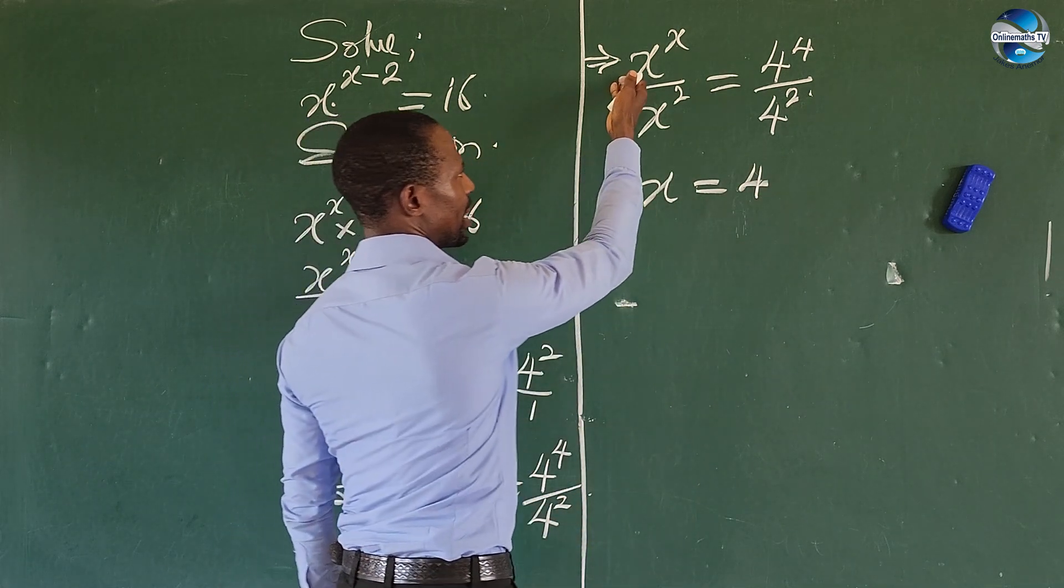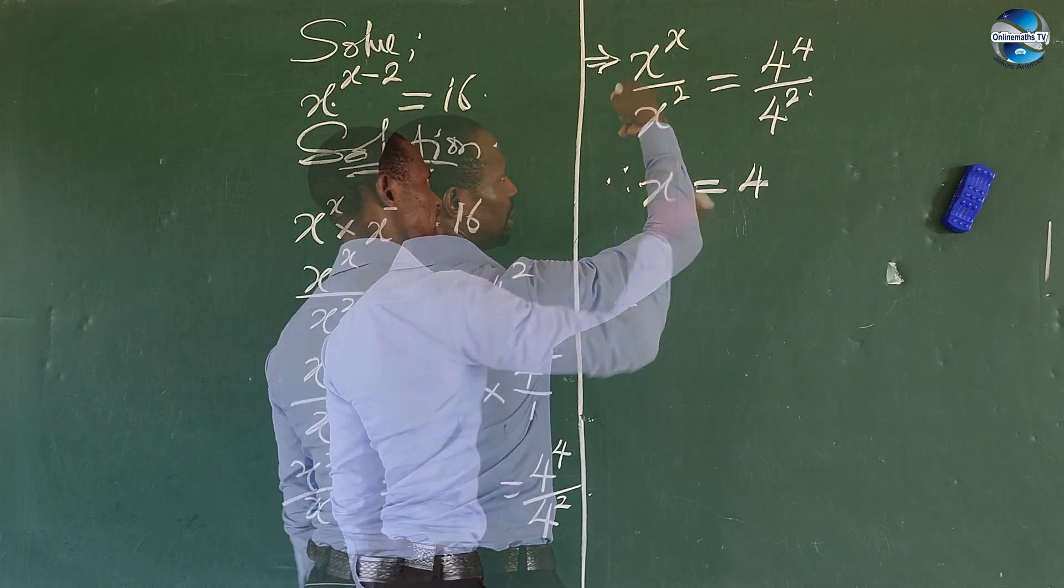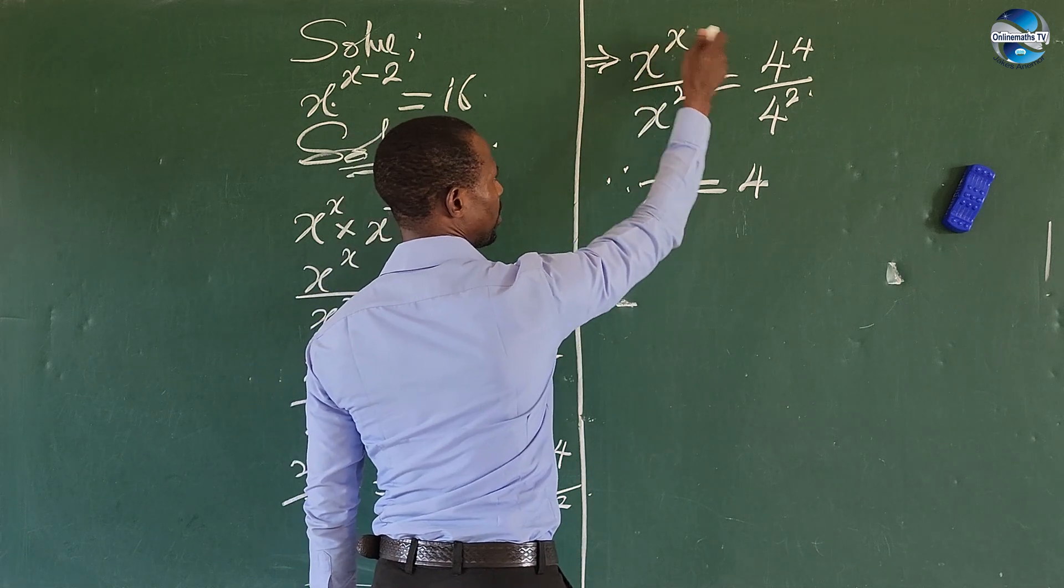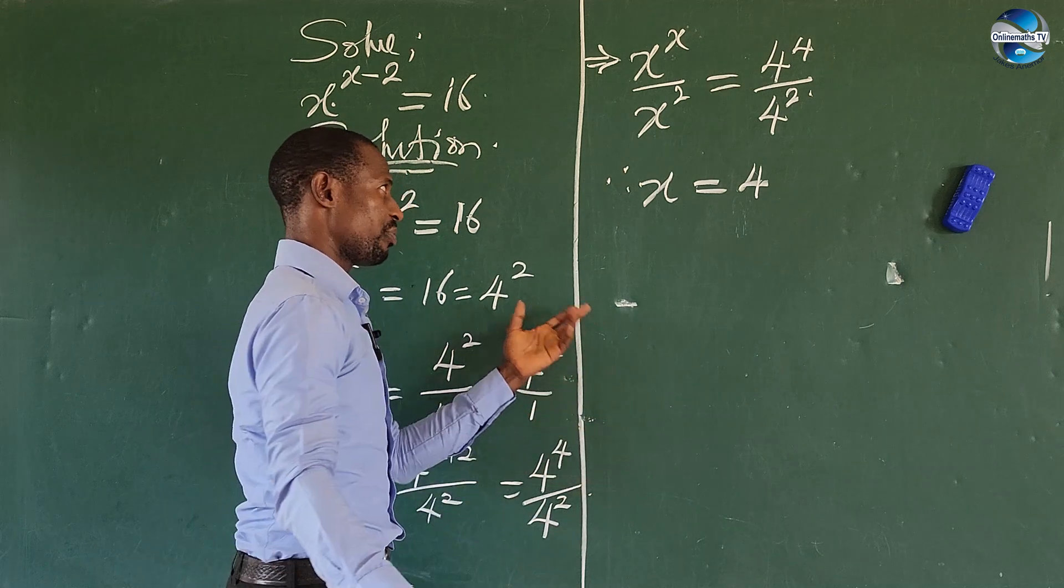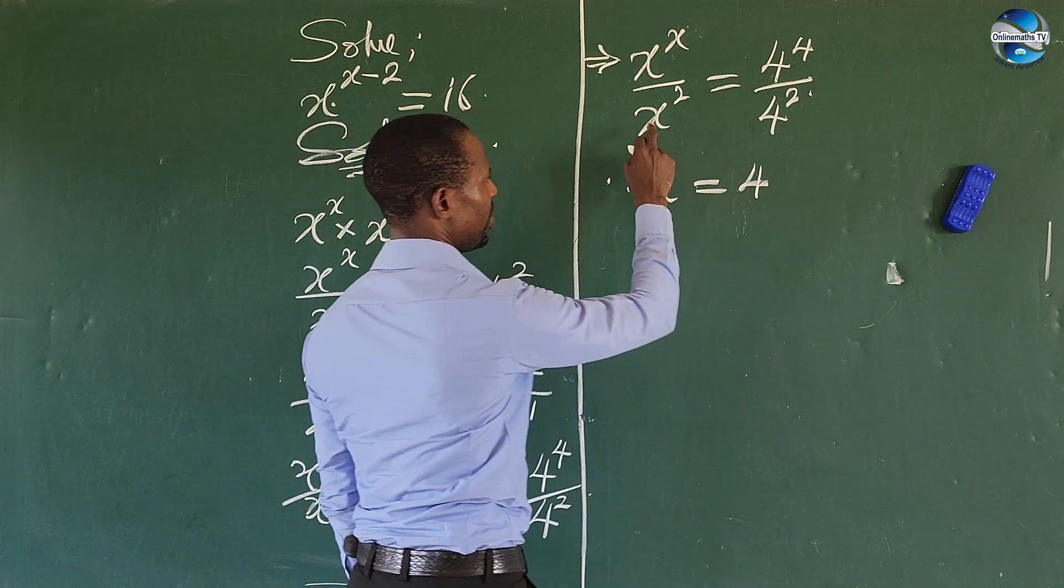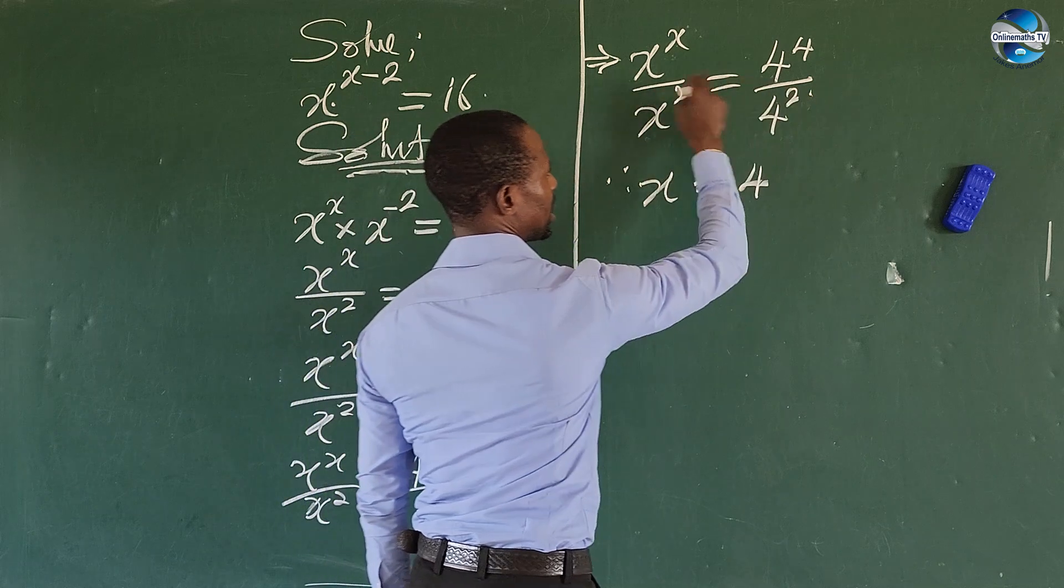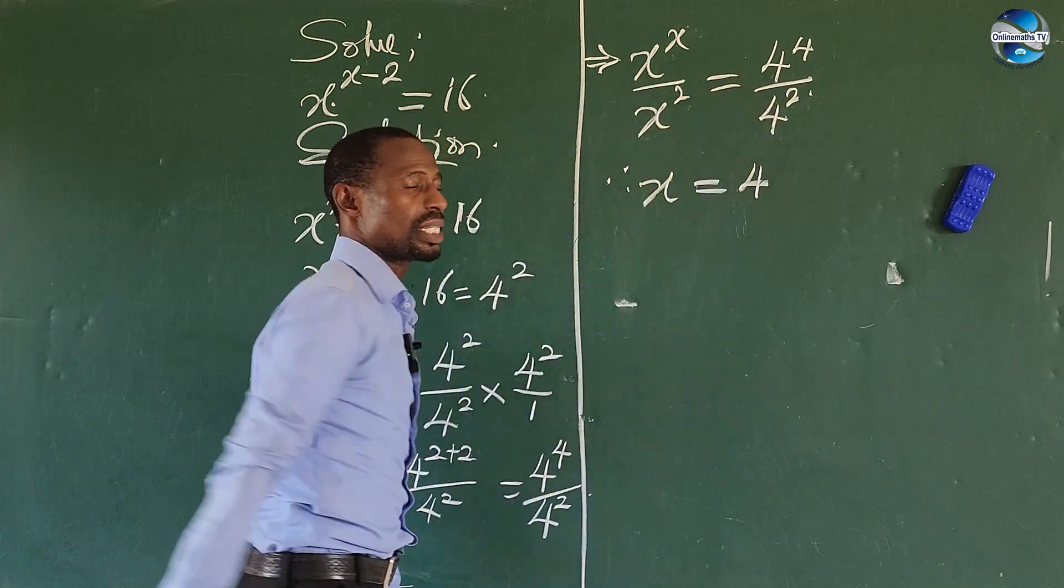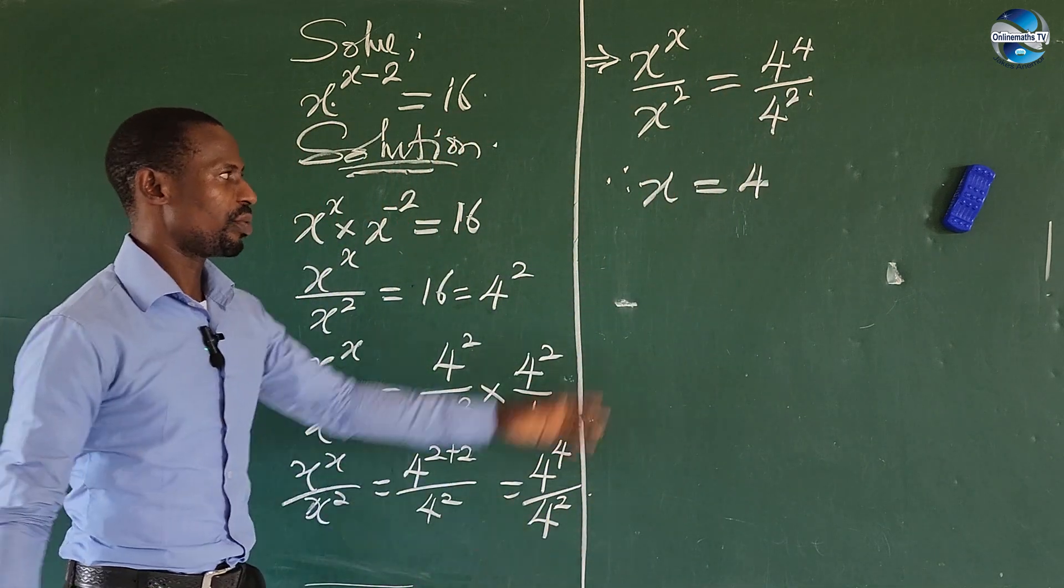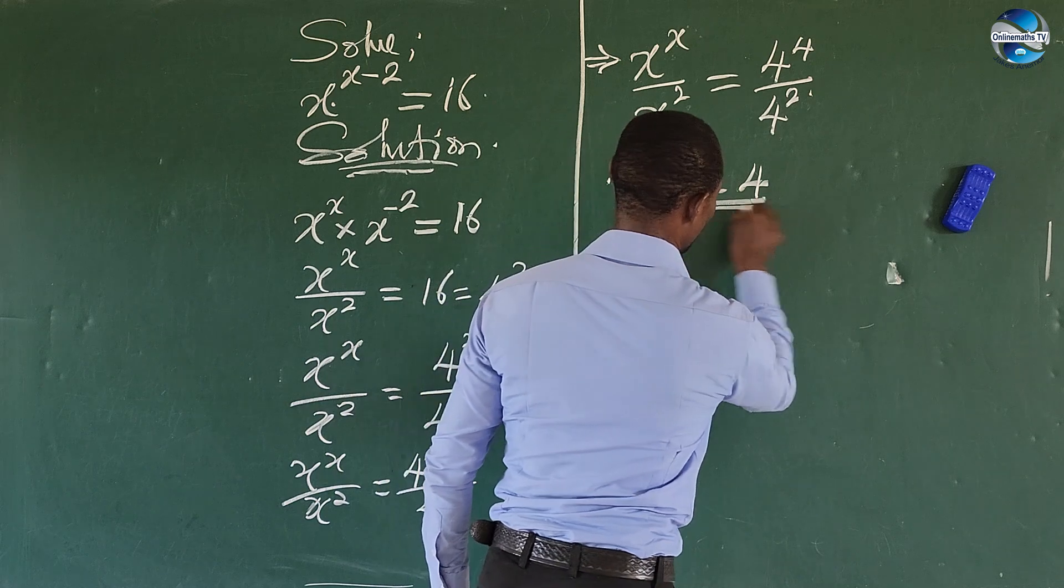Because if you take this numerator, this is 4 itself, this is 4 itself, so x is equal to 4. Or if you take the denominator where we have x to the power of 2 is equal to 4 to the power of 2, then the exponents are the same and so the bases can equate themselves. So it does mean that x is equal to 4.